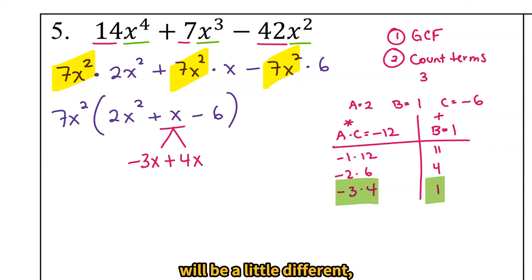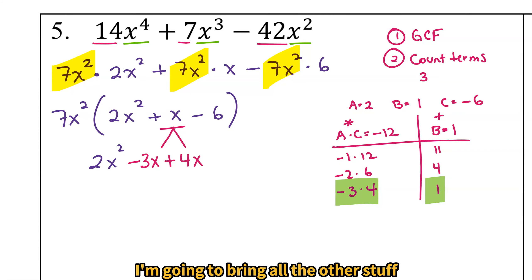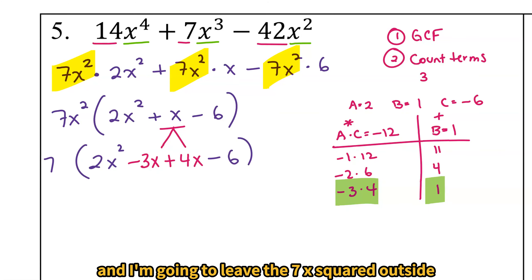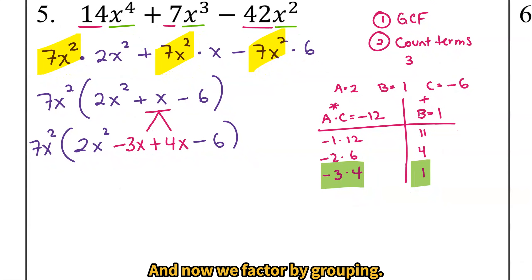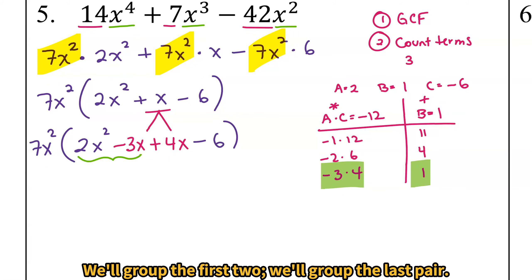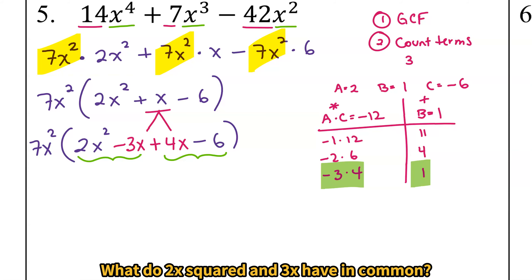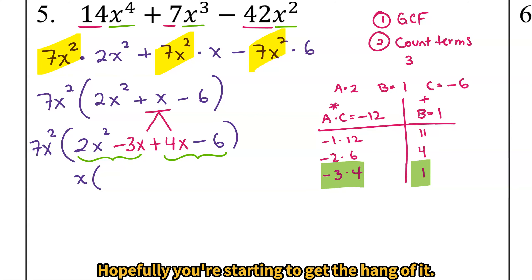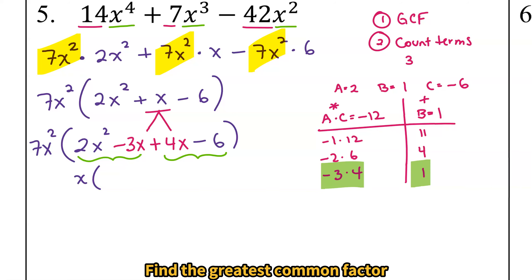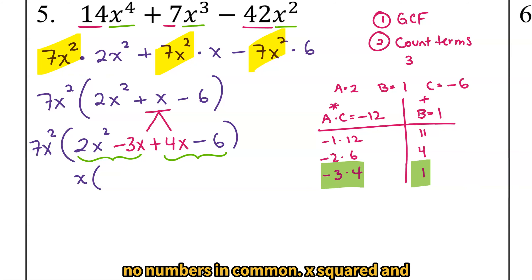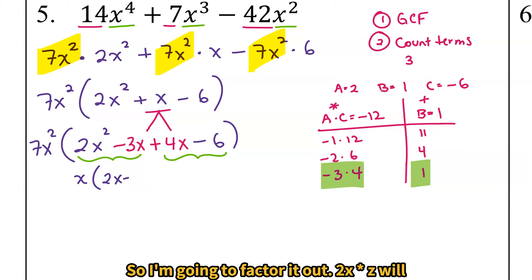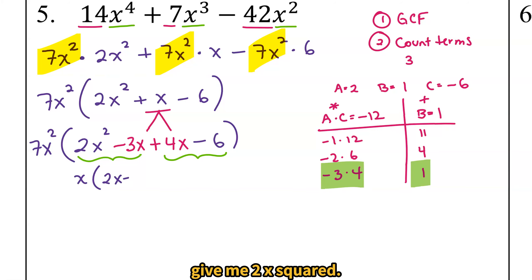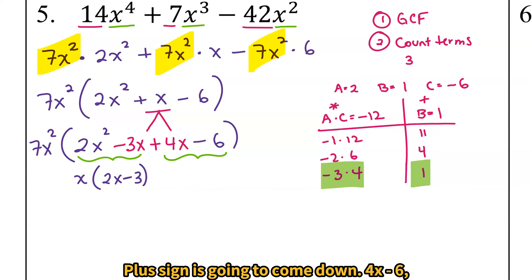I'm going to bring all the other stuff down — 2x squared and 6 — and leave the 7x squared outside so I don't forget about it. Now we factor by grouping. We'll group the first two and group the last pair. What do 2x squared and negative 3x have in common? They have an x in common. I see 2 and 3 have no numbers in common, but x squared and x share an x, so I'm going to factor it out. 2x times x gives 2x squared, and negative 3 times x gives negative 3x.